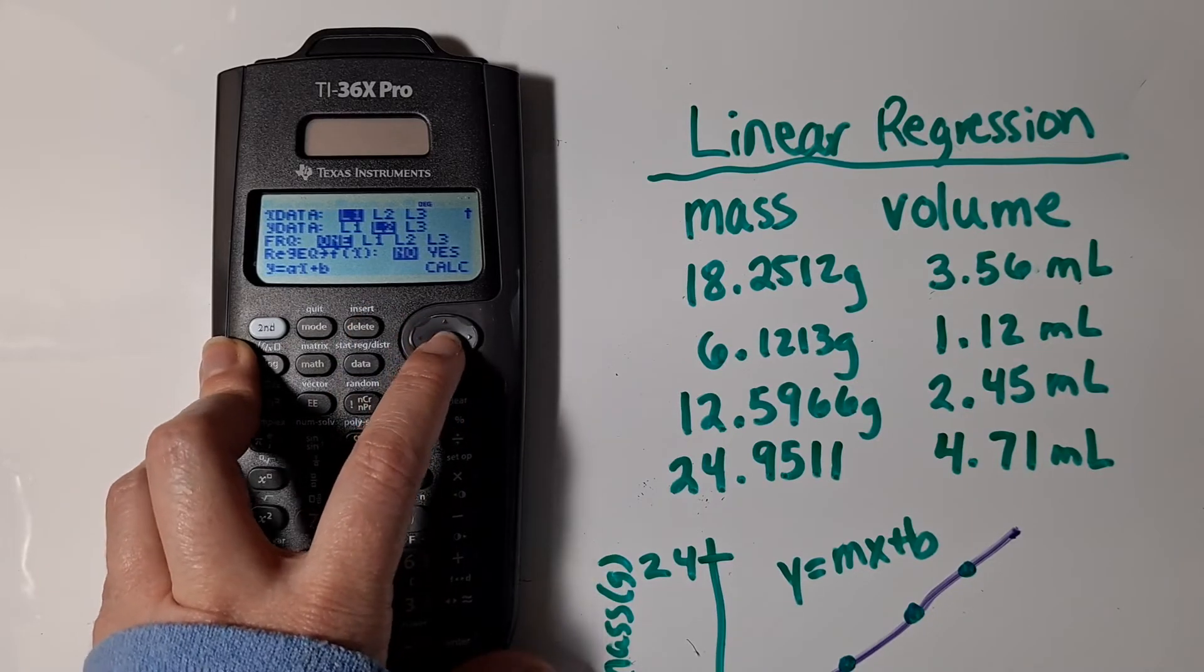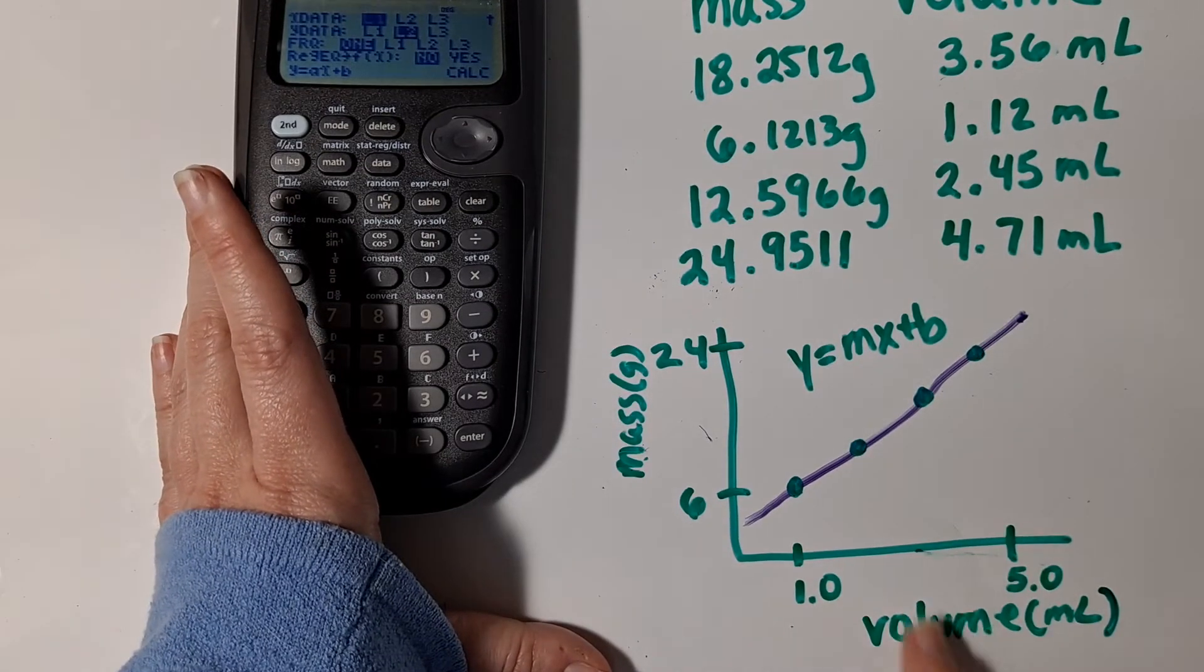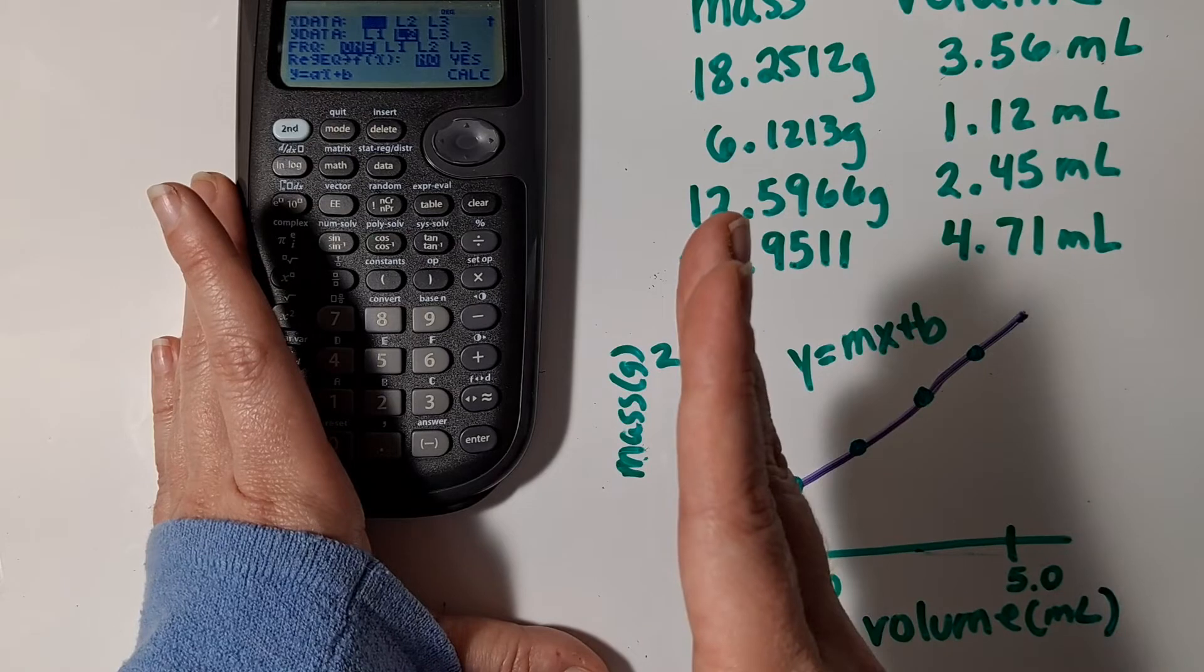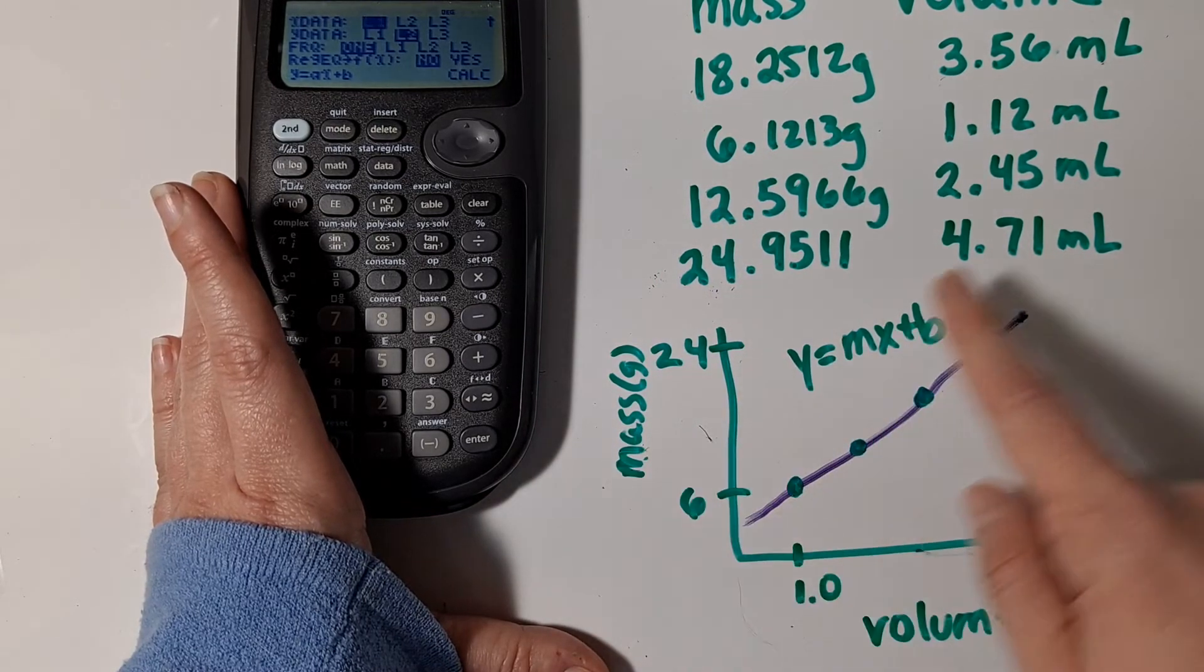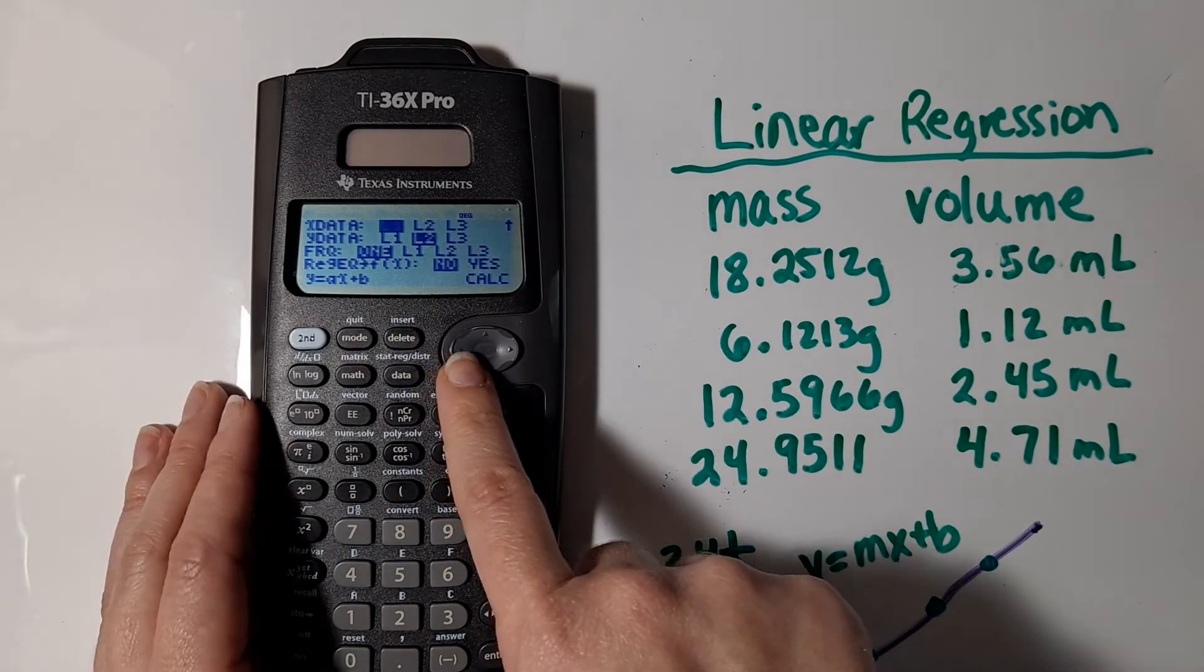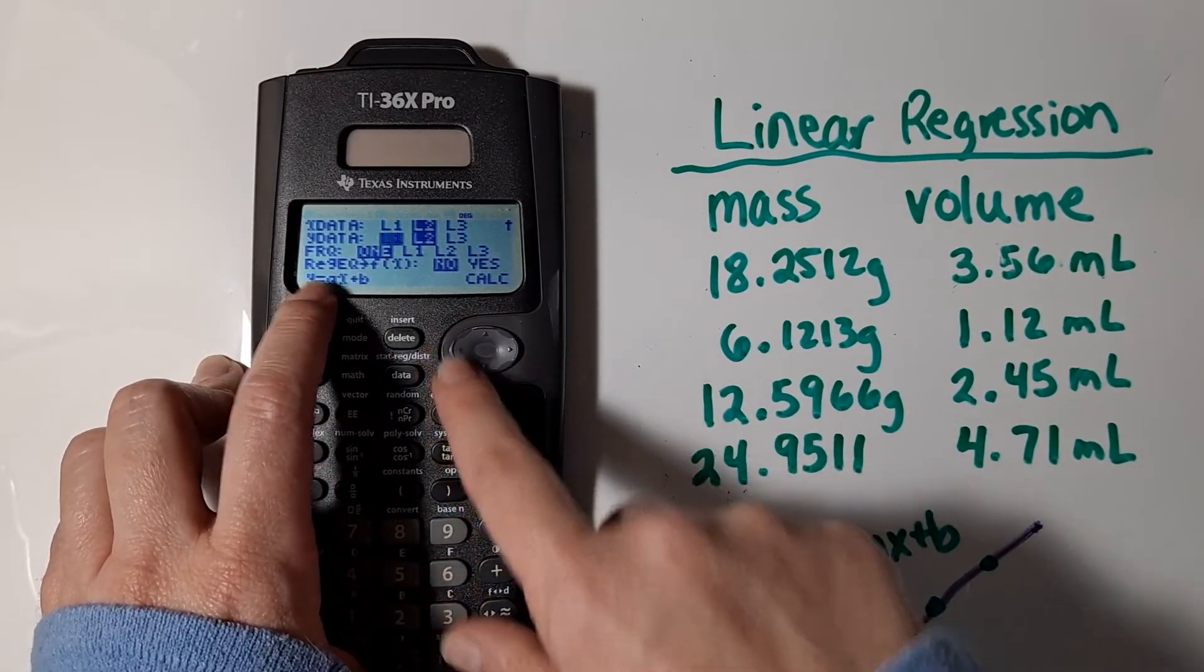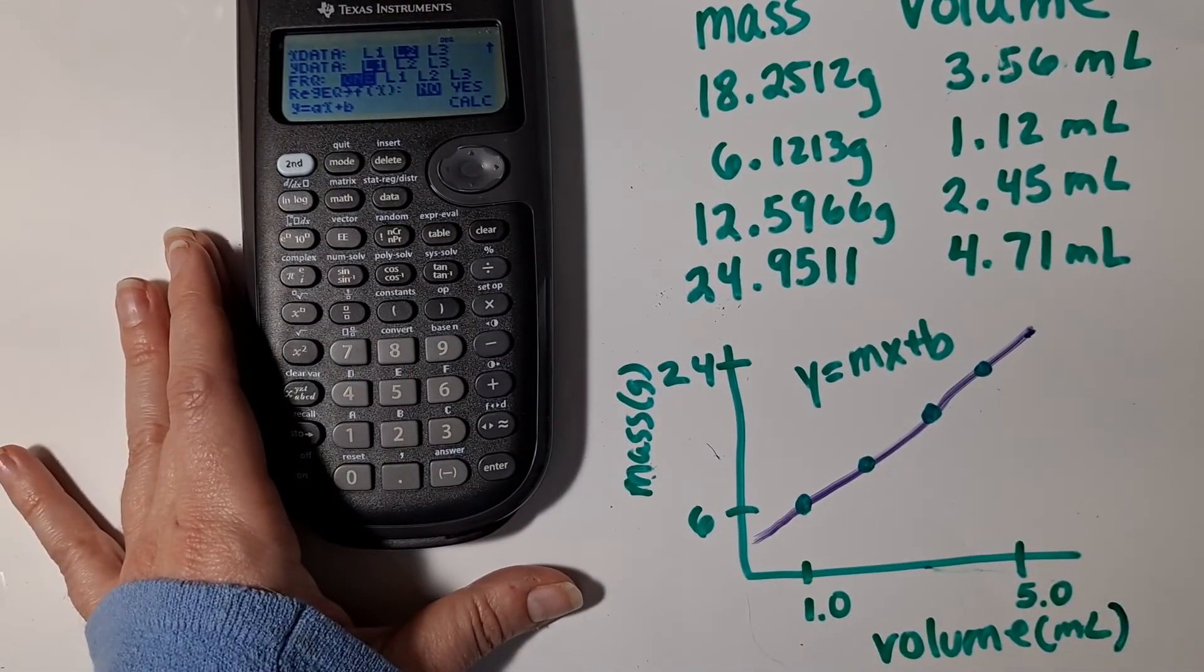The next thing I have to do is tell my calculator which variable is on the X axis and which variable is on the Y axis and where I typed in that data. So for me, I typed in my masses in that first list, but my masses correspond to the Y axis on my graph and my volumes correspond to the X axis. So I need to tell my calculator that my X data is in list two because that's where I typed it in and my Y data was in list one. But you pick whatever corresponds to the graph that you're trying to make.